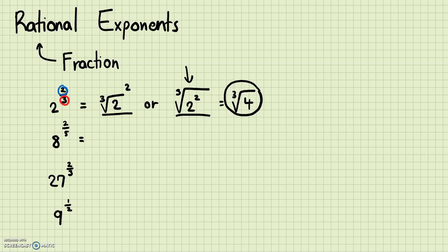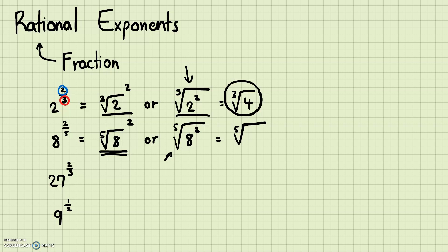Next, 8 to the 2/5 power. You can either take the fifth root of 8 and then square that, or do 8 squared and then the fifth root of that. In this case it's easier to square first: 8 squared is 64, so the answer is the fifth root of 64.